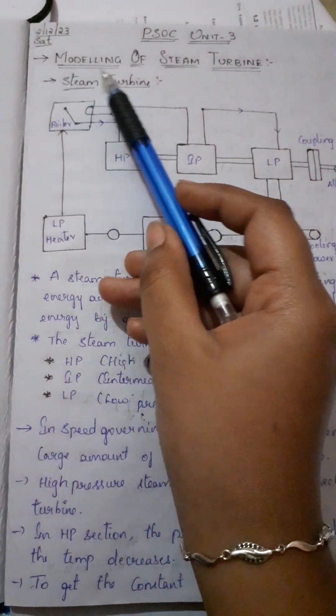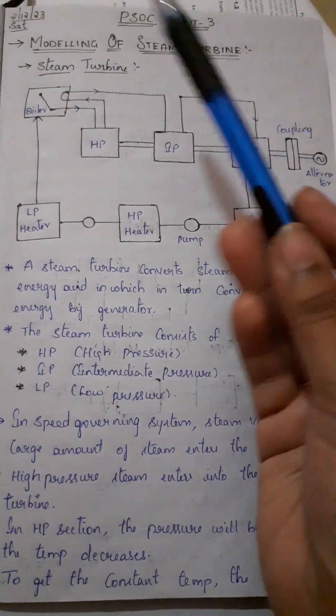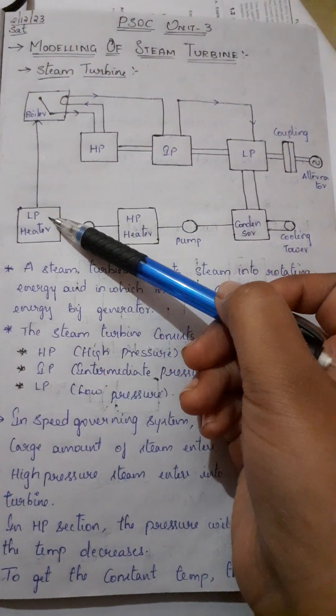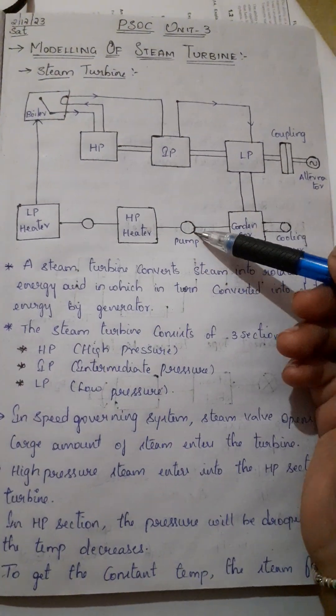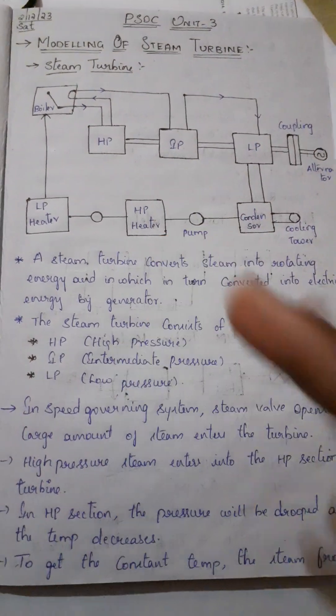The first concept is modeling of steam turbine. Here is the modeling of steam turbine. We have a boiler, LP heater, HP heater, pump, condenser, LP and IP. Here we observe this.